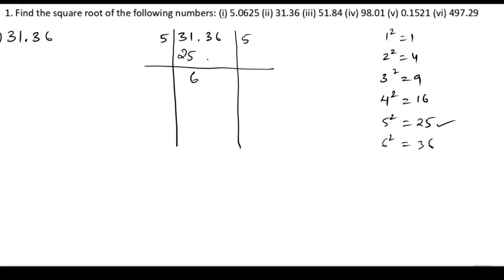Next, we bring 36 down and put the bar on this number, giving 636. We can see there is a decimal, so we put the decimal point. We write 5 again, so 5 plus 5 is 10. The nearest number to 6 in the 10 table — 106 into 6: 6 times 6 is 36.